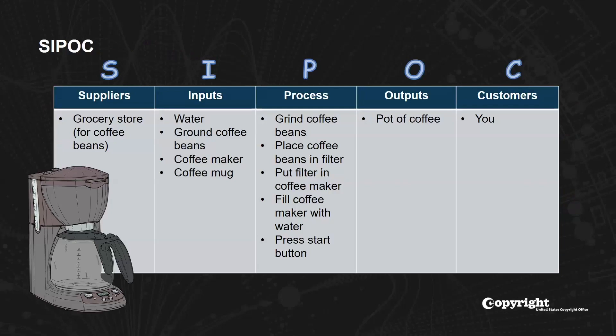SIPOC itself is an abbreviation for the elements that the diagram addresses: Suppliers, Inputs, Processes, Outputs, and Customers. The SIPOC example you see above takes you through making coffee to show this tool in action. SIPOC is a high-level way to look at and understand everything involved in a process. Mapping as-is processes using tools like SIPOC enables the office to identify the relevant aspects of a process before improvement work begins. In addition, the office is also looking to define metrics that will later help us measure improvements and efficiencies as processes are reengineered.